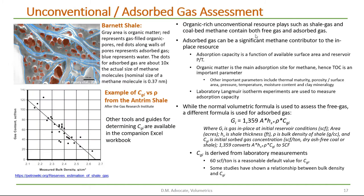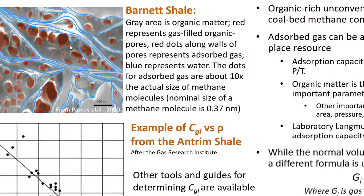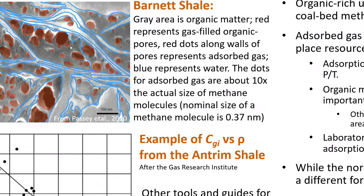Organic rich unconventional resource plays, such as shale gas and coal bed methane, contain both free gas and absorbed gas. If we look at this SEM photomicrograph from the Barnett Shale, the gray area represents organic matter. The red represents the gas-filled organic pores. If we zoom in on these pores, we'll see the red dots along the walls of the pores, which represent the absorbed methane gas.